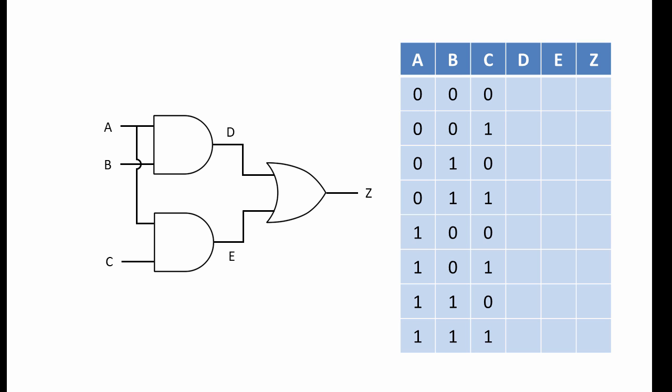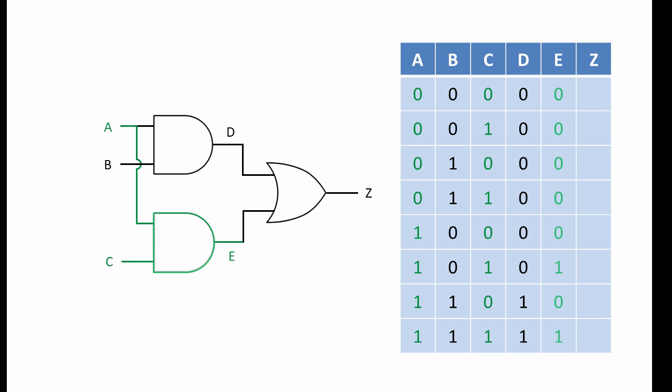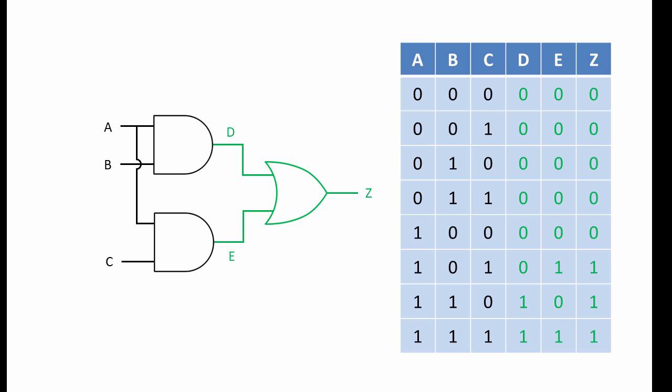In this example, we have three inputs as we did before, but notice that input A has been split. Input A is feeding the top AND the bottom AND gate. You are also being asked to include intermediate points D and E in the truth table. To get each value of D, we pass combinations of A and B through an AND gate. Then, to get each value of E, we pass combinations of A and C through an AND gate. Now that we have pairs of values for D and E, we can pass them through an OR gate to give us values of Z.